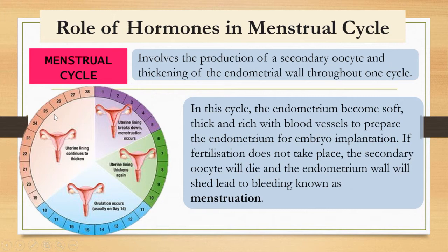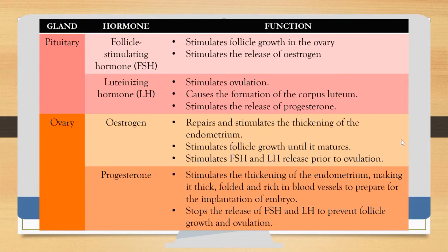The uterine lining continues to thicken to support embryo implantation. If there is no fertilization, the endometrium wall sheds and a new menstrual cycle begins with bleeding. This cycle continues to repeat if fertilization does not take place.